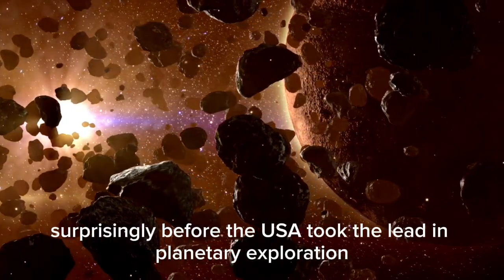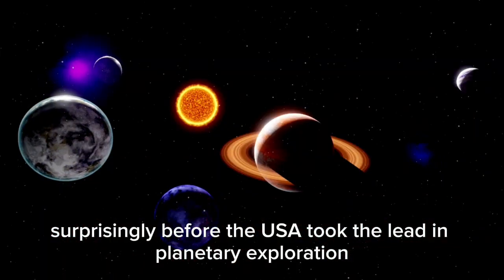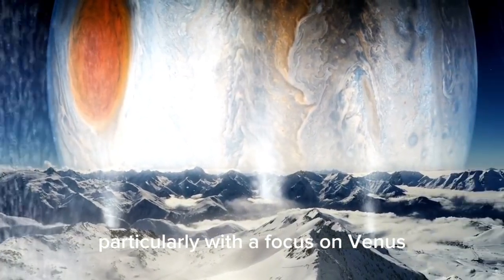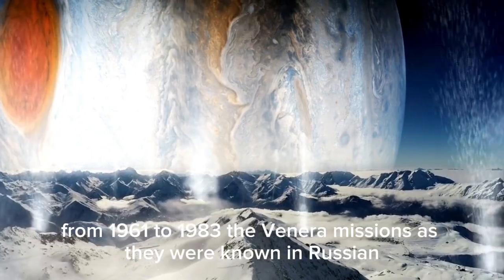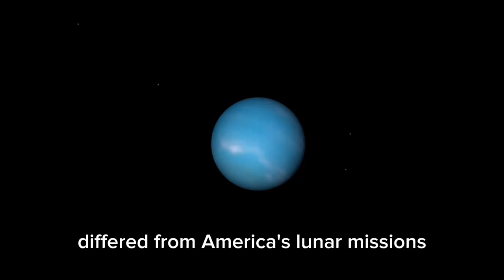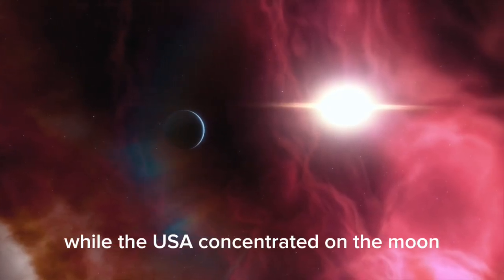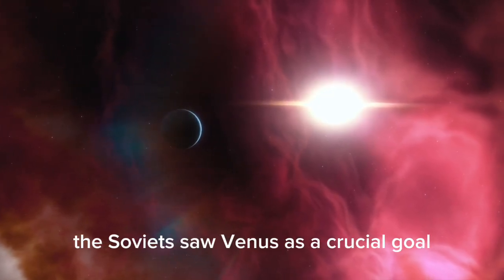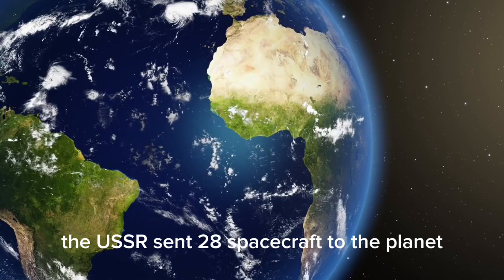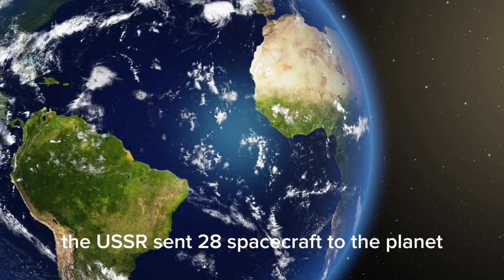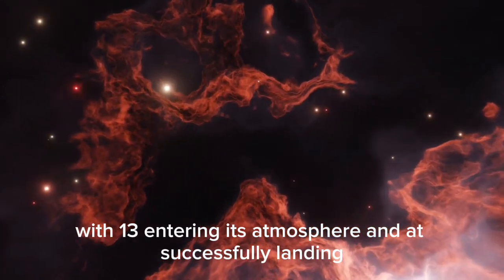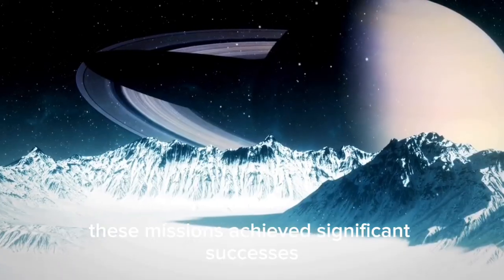Surprisingly, before the USA took the lead in planetary exploration, the Soviet Union was at the forefront, particularly with a focus on Venus. From 1961 to 1983, the Venera missions, as they were known in Russian, differed from America's lunar missions. While the USA concentrated on the Moon, the Soviets saw Venus as a crucial goal. Despite the harsh conditions on Venus, the USSR sent 28 spacecraft to the planet, with 13 entering its atmosphere and 8 successfully landing.